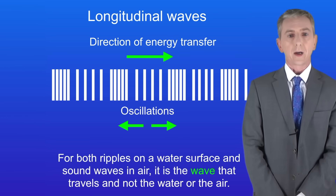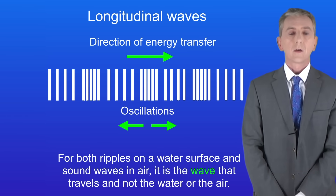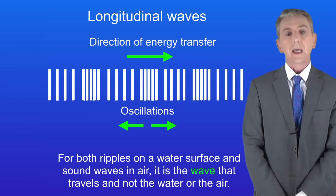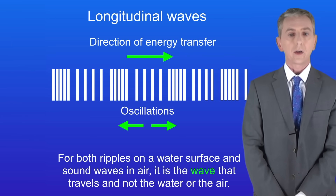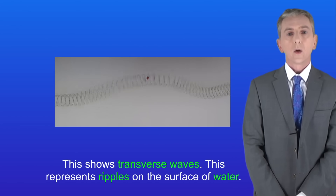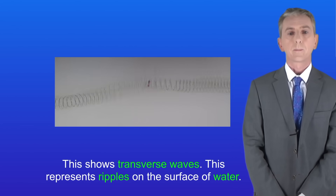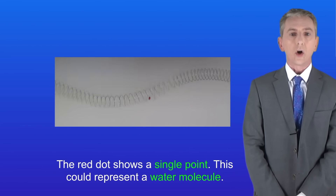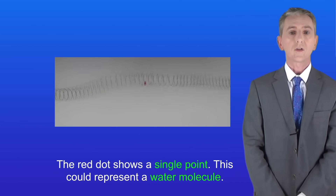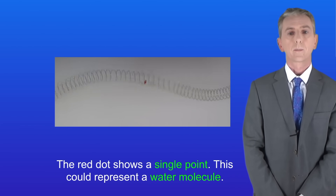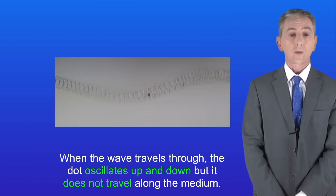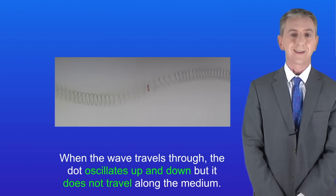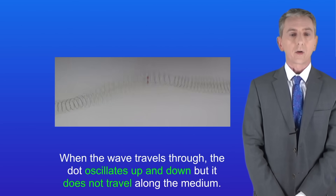There's one really important fact to learn about waves. For both ripples on a water surface and sound waves in air, it's the wave that travels and not the water or the air. We can see this using a slinky. This shows transverse waves, representing ripples on the surface of water. The red dot shows a single point — representing a water molecule. When the wave travels through, the dot oscillates up and down but does not travel along the medium.